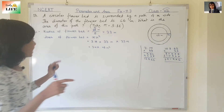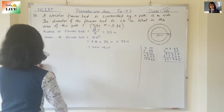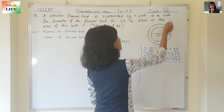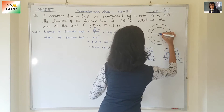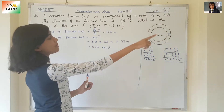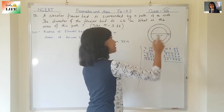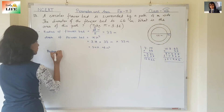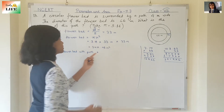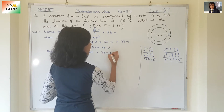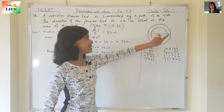Now we need to find out the area of the flower bed with the path — that means the bigger circle. The radius of the small circle was 33 meter, and the path is 4 meter wide. So the radius of the big circle will be 33 plus 4, which is 37 meter.